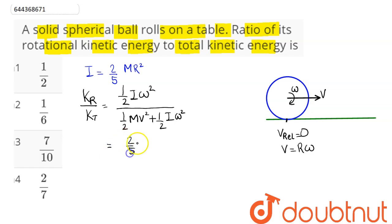2/5 mr² times ω². And in the denominator this becomes mv² plus we have 2/5 mr² times ω². Now we can see here mv² becomes equal to... since v equals rω, so mv² becomes mr²ω².